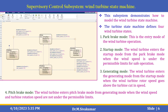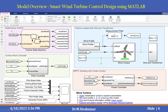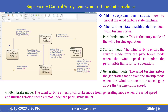This is the first subsystem called the supervisory control subsystem — that is, the turbine state machine. This subsystem demonstrates how to model the wind turbine state machine. The turbine state machine defines four different wind turbine states.